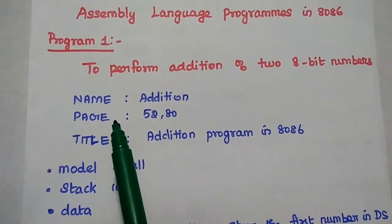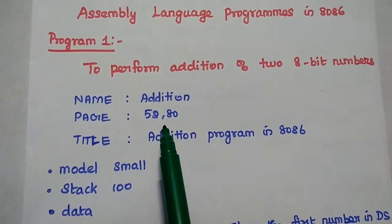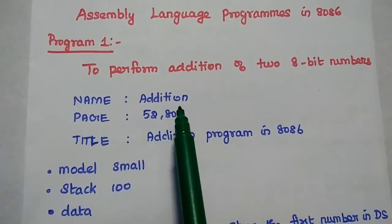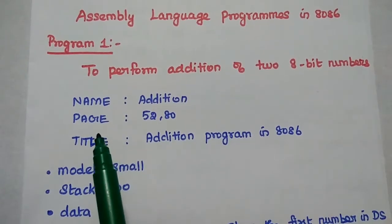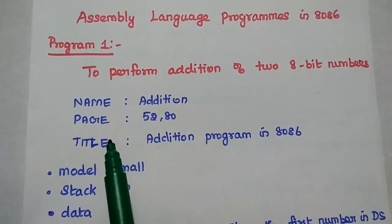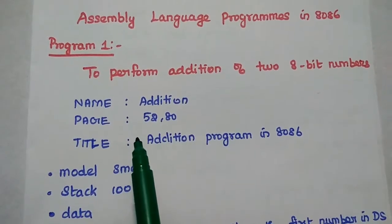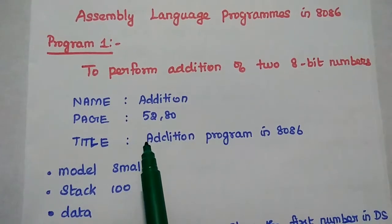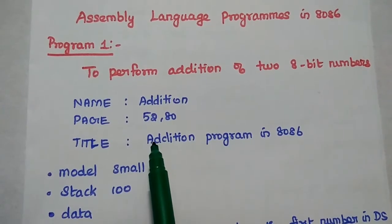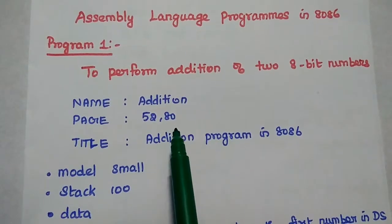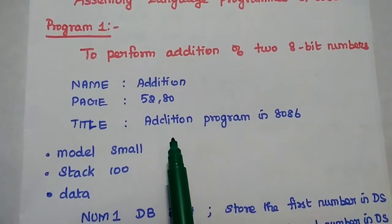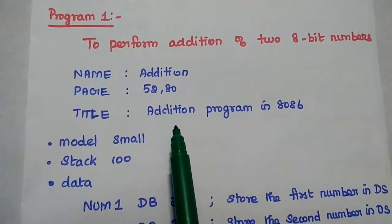Here the name represents the name of the module — here it is 'addition'. The page assembler directive is used to represent the number of lines and the characters per line to be used in the program. The values 52 and 80 are the standard values for this 8086 microprocessor.